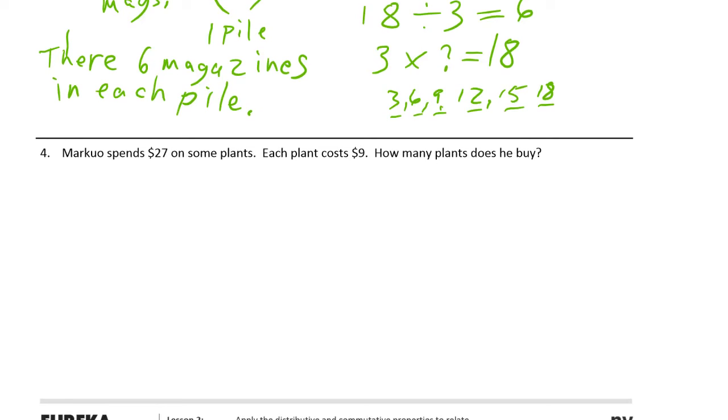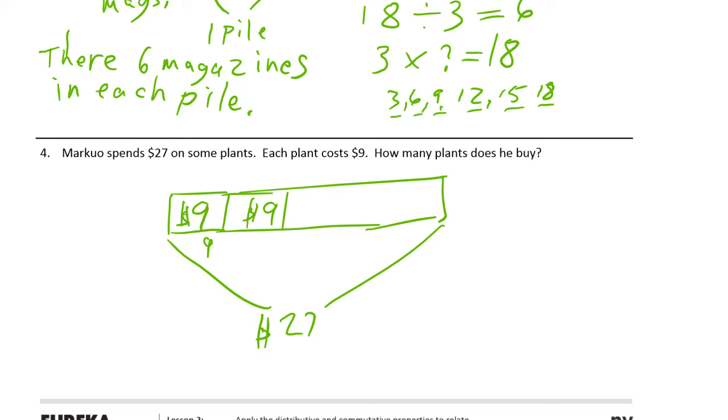And then, finally, we have Markuo spends $27 on some plants. And each plant costs $9. How many plants does he buy? Alright, so, we've got a tape diagram. We could just do this, skip counting by 9. So, that's 9. Here's another 9. That makes 18. And then, another 9. Oh, that's 27 right there. So, it only takes 3 nines.